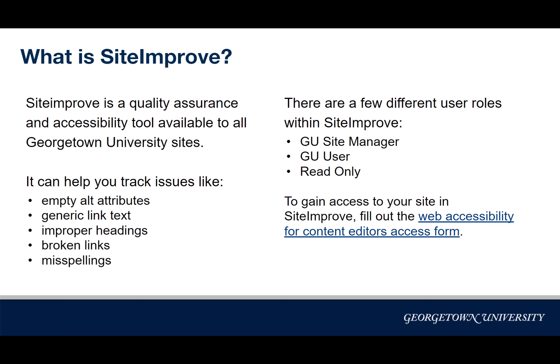The next role above read only is GU user. You can get this role by taking our Decisions in Siteimprove course on Canvas and passing the quiz with a score of 75% or better. Once you're a GU user, you'll still be able to see the same sections as a read only user, but the difference is that you'll be able to take actions on some of the issues, like approving a misspelled word.